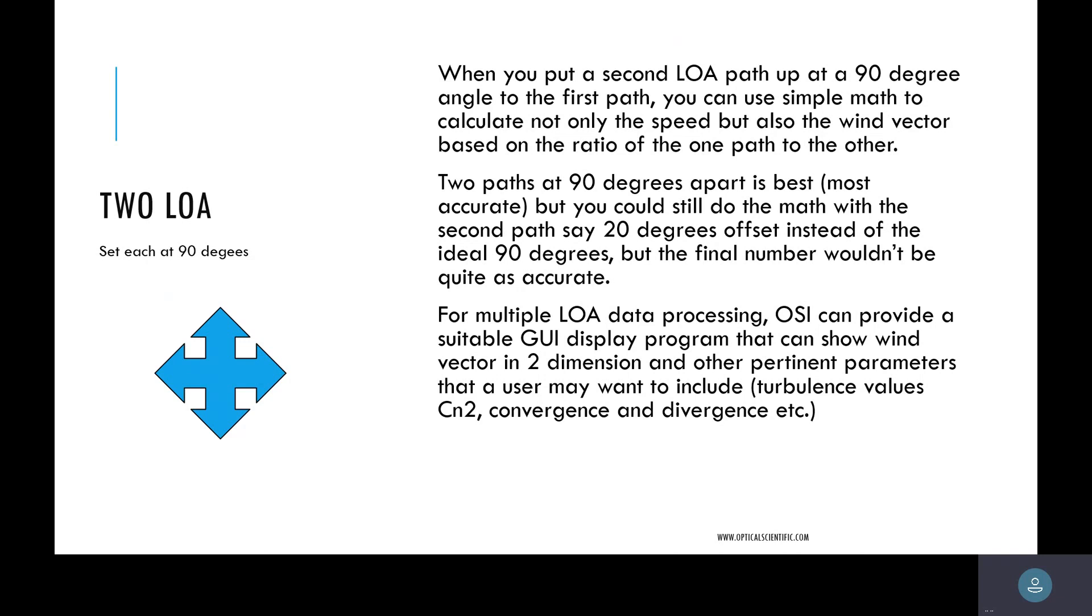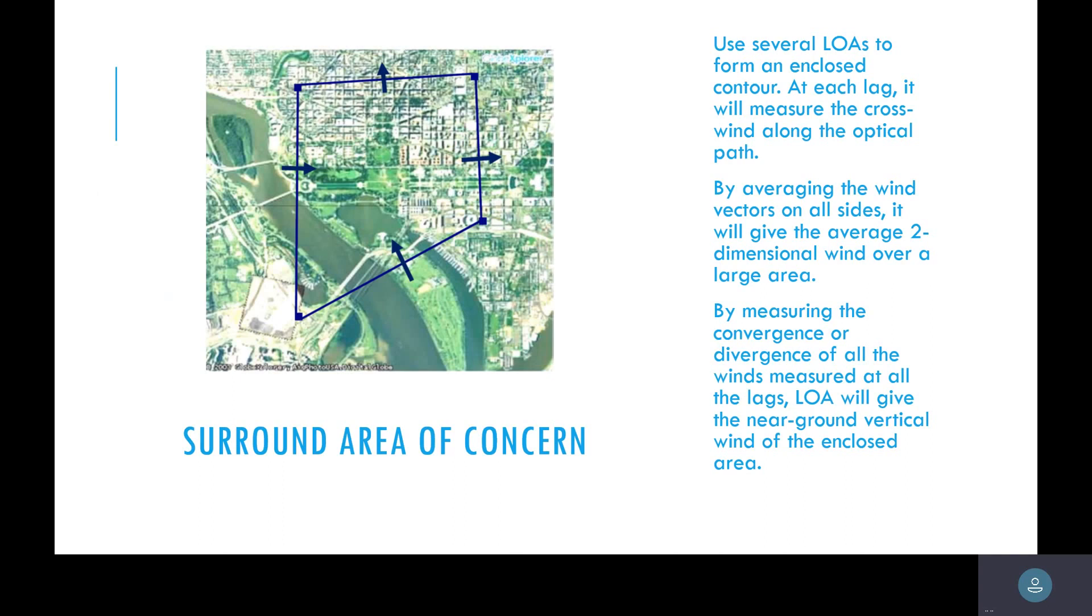For multiple LOA data processing, we can provide a system. We have a mini DCU that we can bring all these in and then send out that signal to a system that you have. If you use several LOAs, you can enclose the area. At each leg, we'll measure the crosswind along that optical path. By averaging those path vectors on all sides, they'll give you a two-dimensional wind over the large area. So you'll understand everything that's going in and out of that area.